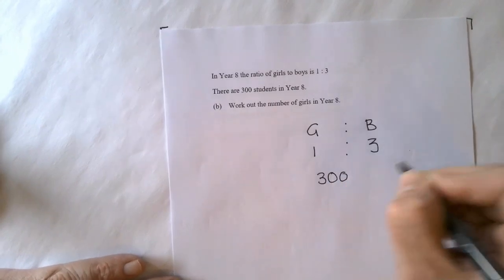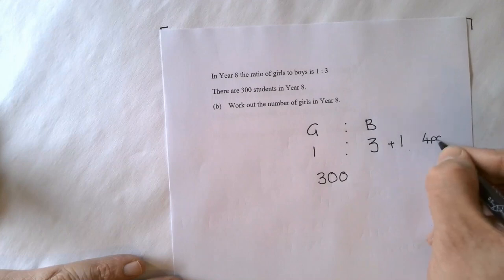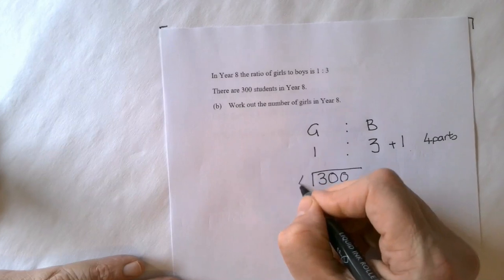So same process. 3 plus 1 equals 4. So there's 4 parts altogether. So you do 300 divided by 4.